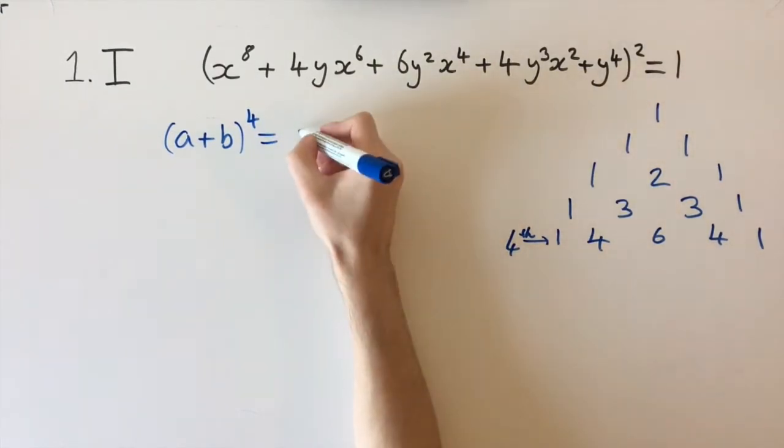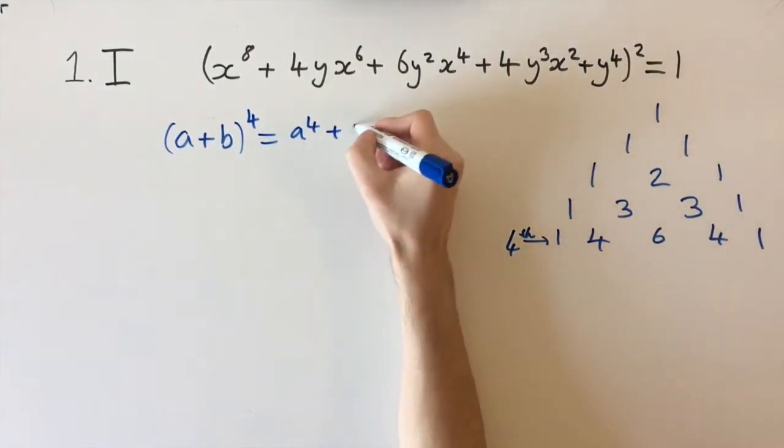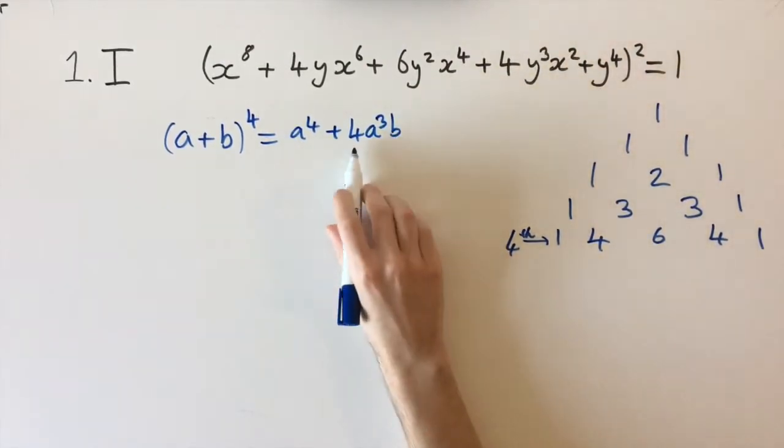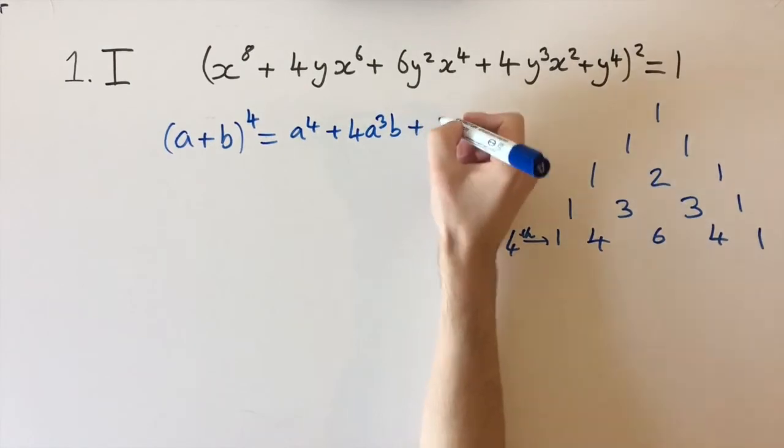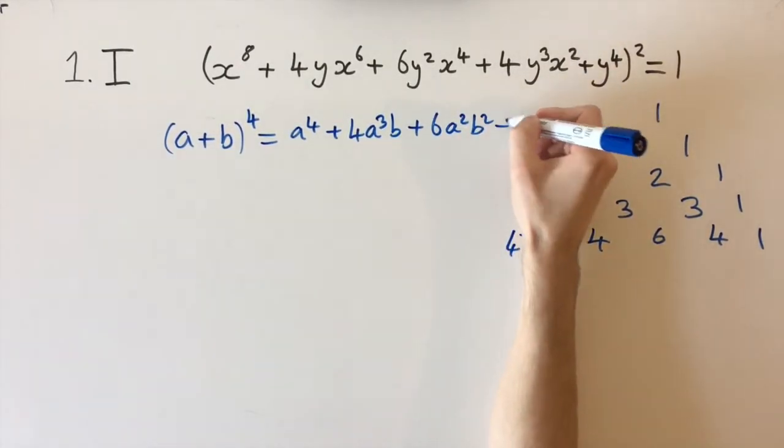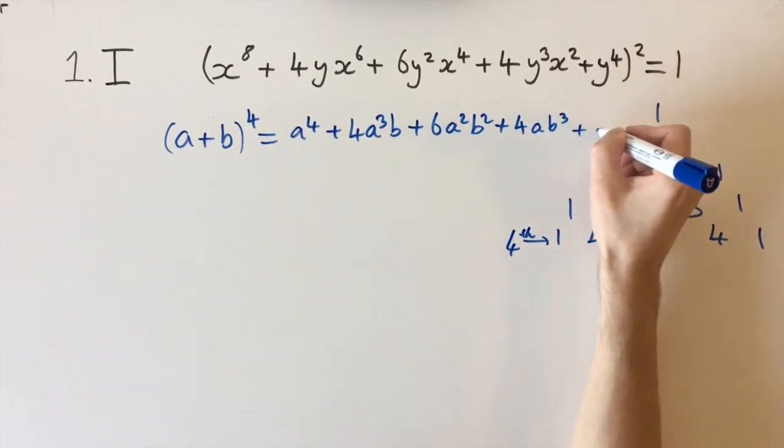This tells us that we'd have a to the power of 4, with a coefficient of 1, then 4 times a cubed times b, that's where the 4 comes from, then 6a²b², plus 4ab³, and then plus b to the power of 4.